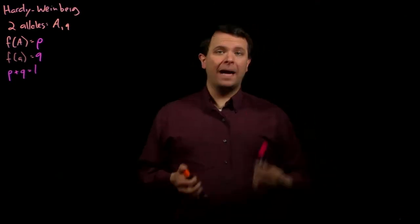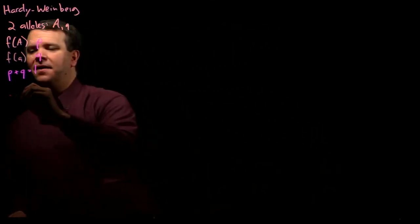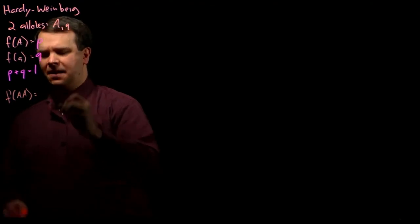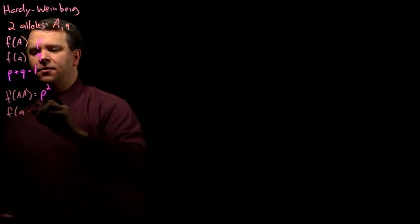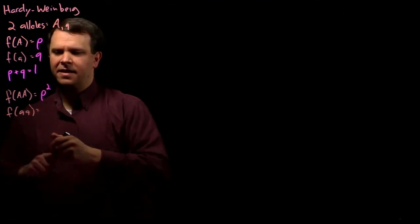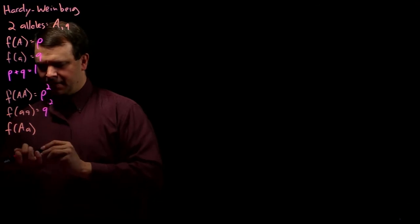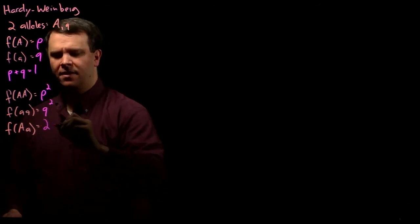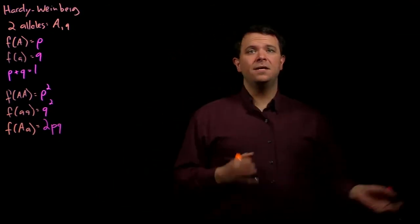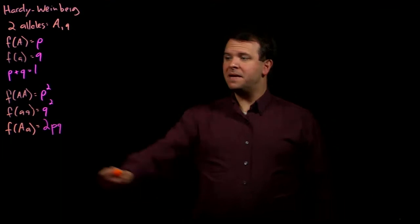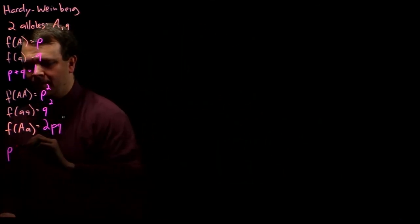Now, if random mating produced the population that we're studying, then the frequency of the homozygote big A big A is P squared, the frequency of the homozygote little a little a is Q squared, and the frequency of the heterozygote big A little a is 2 times P times Q. And for justification for those probabilities, you can refer back to the previous video. These genotype frequencies must also add up to one.